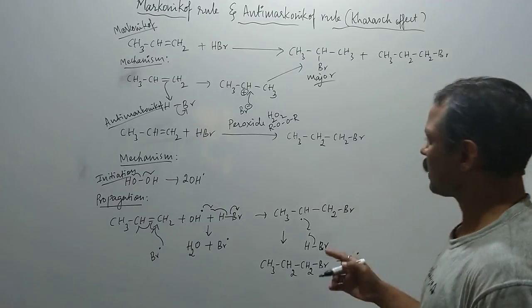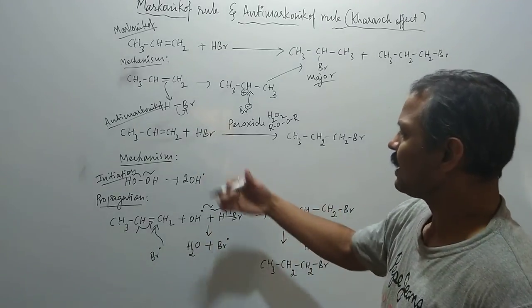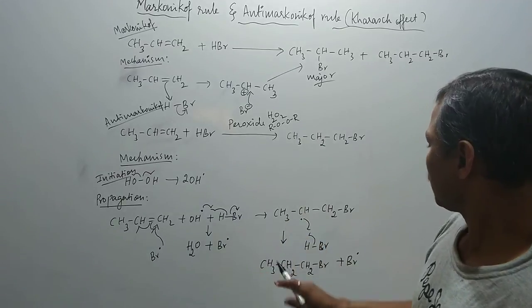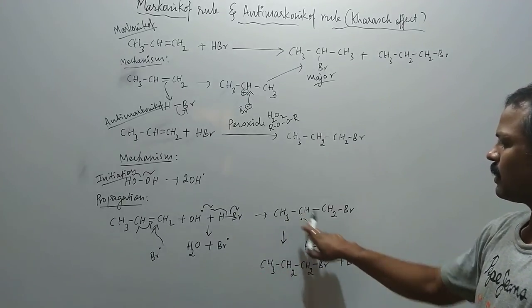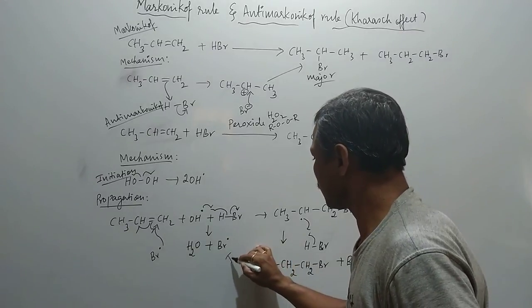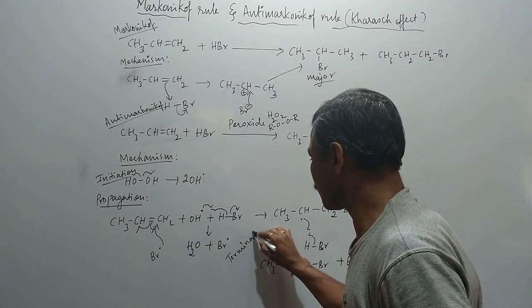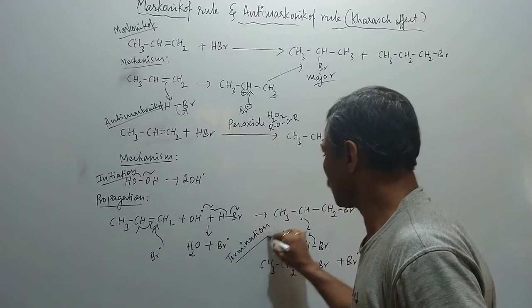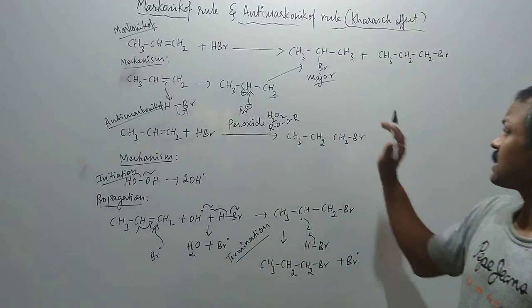So the other one is the bromide radical will attack one more molecule like that. It continues and terminates. The process which followed here is called the termination process.